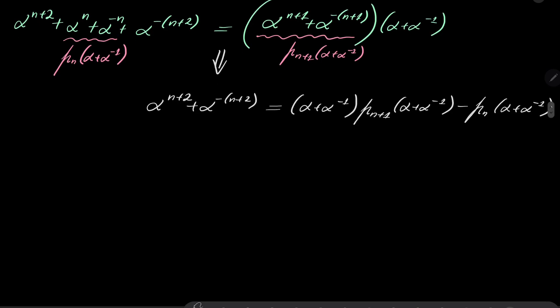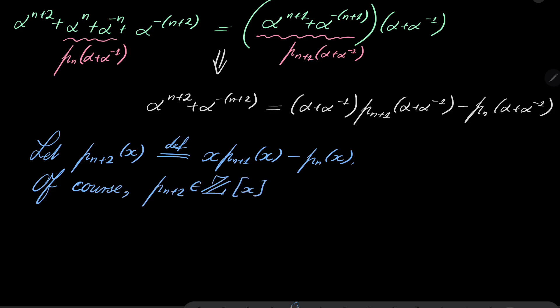In fact, we have some recursion, and now let p_{n+2}(x) be defined as x·p_{n+1}(x) - p_n(x). Of course, p_{n+2} has, once again, integer coefficients. And what is the degree of this polynomial? Well, here we have polynomial of degree n+1, but here we have times x, so it's of degree n+2, and notice that this is of degree n, so it cannot cancel with higher powers of x, which concludes our inductive proof. We have inductively proven our claim.